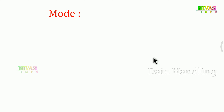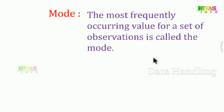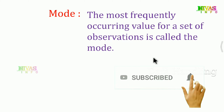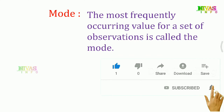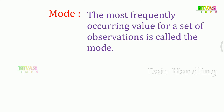Mean in common language means average. The most frequently occurring value for a set of observations is called the mode. Mode is simple — we can use observations instead of numerical values.